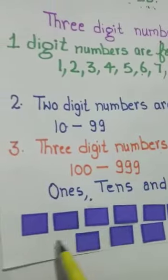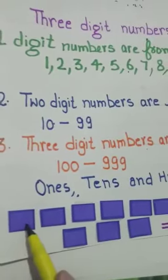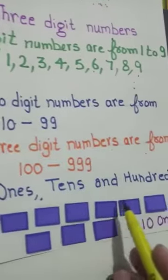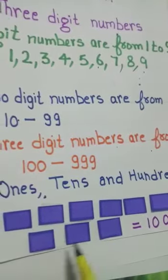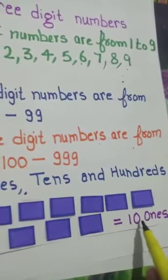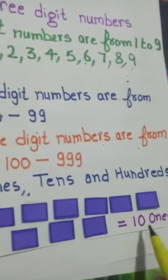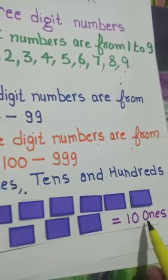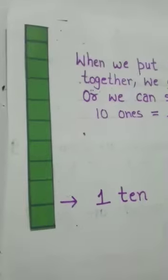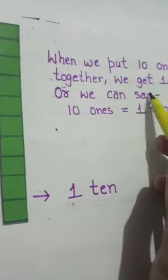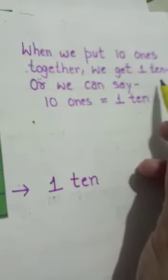Let's start with ones. Just count these: one, two, three, four, five, six, seven, eight, nine, and ten. We have ten ones. When we put ten ones together, we get one ten.